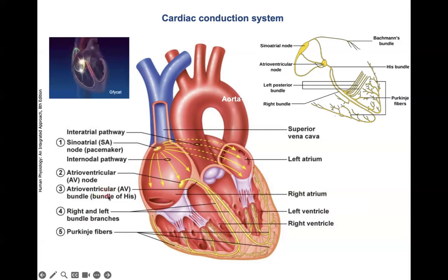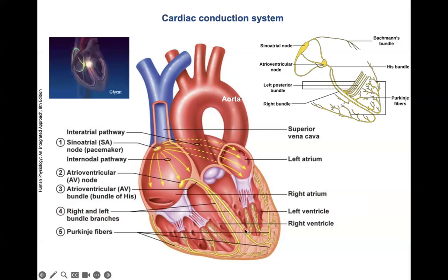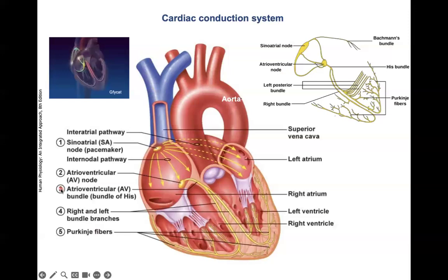Station 3 is the AV bundle, or bundle of His. This passes the signal down to station 4: the right and left bundle branches. Finally, station 5 is the Purkinje fibers. Stations 3, 4, and 5 are required for the excitation of the ventricles, which is a large mass of muscle that must be excited very quickly. The conduction velocities of stations 3, 4, and 5 are much faster than the AV node and the atria, as we will see in numbers.